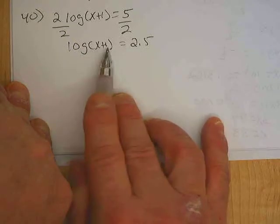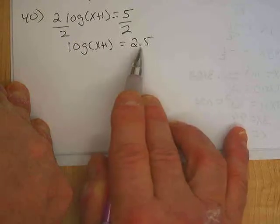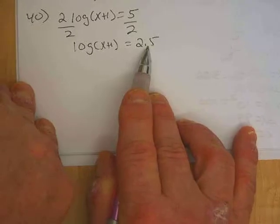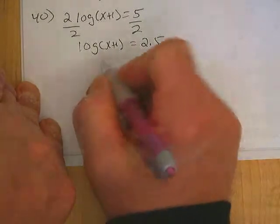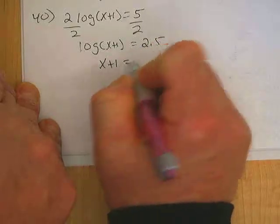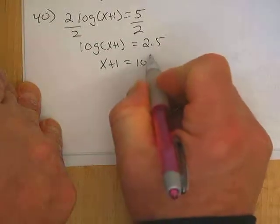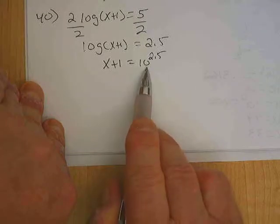So I can't just subtract 1, what I need to do is raise some base to the 2.5 power. And the base we're dealing with in the common log is 10, so what I can say then is x plus 1 equals 10 to the 2.5.